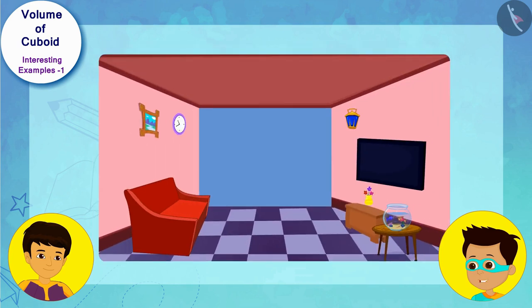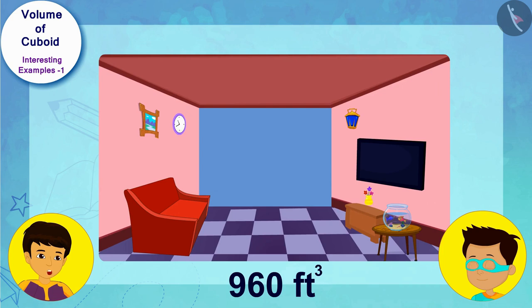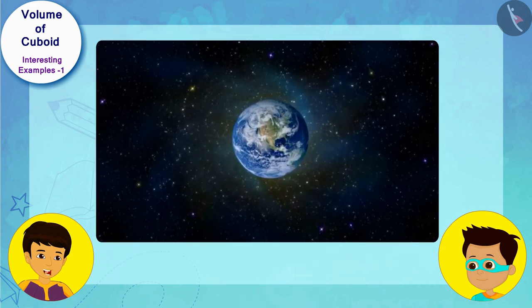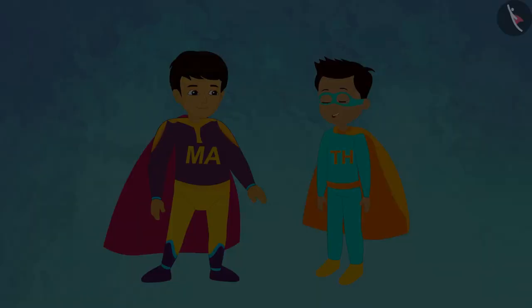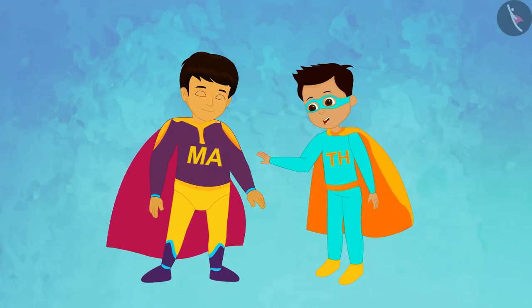Look Manas, the volume of the room is 960 cubic feet. This means 960 cubic feet of air is present in this room. Thomas, if there is so much air present in only one room, then imagine how much air will be present in this entire vast universe — we might not even be able to count that much! Let us return to our world and go for a walk in the park in the open air.